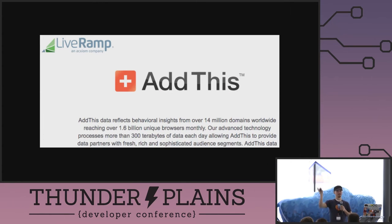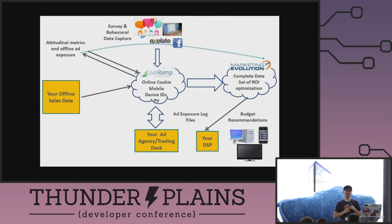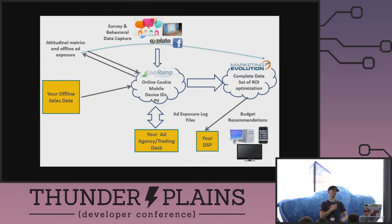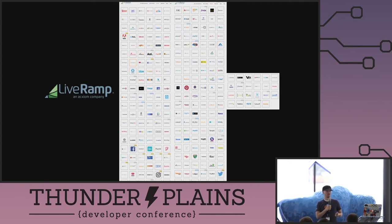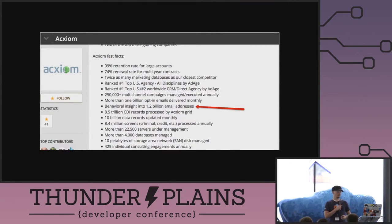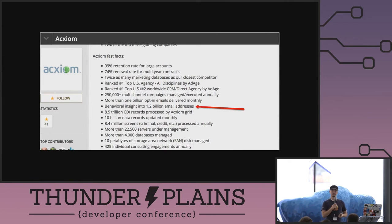AddThis is a partner with LiveRamp, which offers to take companies' CRM databases and tie them to their customers' online activity. LiveRamp says hook up your Sugar CRM and they can tell you everywhere your customers have been online — because their CRM database has your PII, and now LiveRamp and Acxiom have it too. Acxiom claims to have behavioral insight into 1.2 billion email addresses — as big as Facebook or Google — and you've never heard of them. They're based in Little Rock, Arkansas.